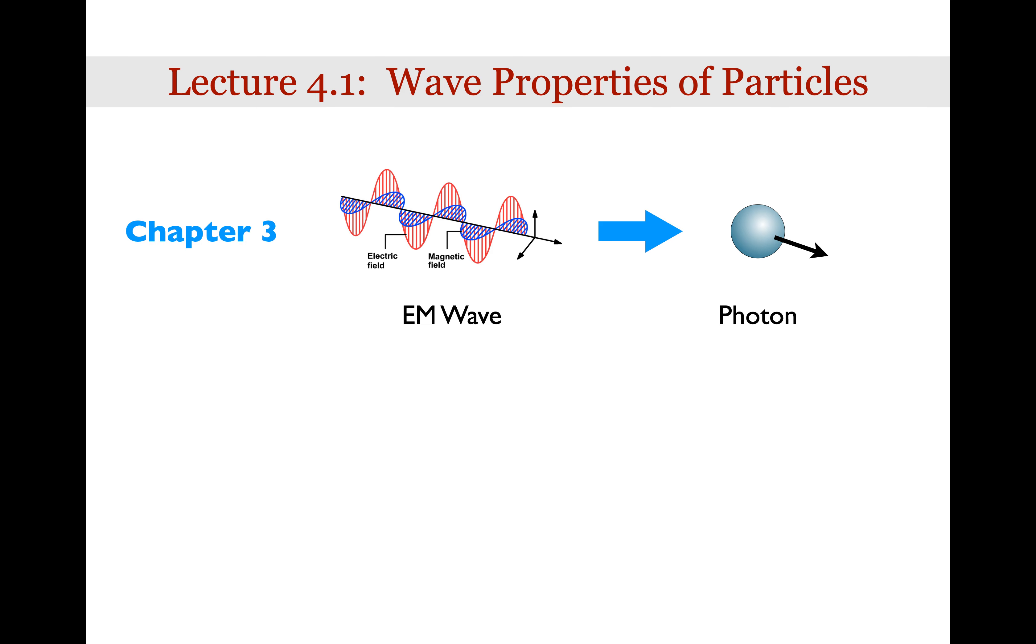Lecture 4.1: Wave Properties of Particles. In Chapter 3, we saw that light sometimes acts like a particle, which we now call a photon. Albert Einstein won the Nobel Prize for this discovery when he showed that the photoelectric effect can only be understood with a particle model of light.